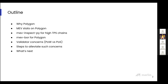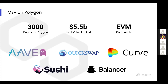Our motivation for solving the MEV problem on Polygon PoS chain was primarily because there is a large DeFi ecosystem currently standing strong on Polygon. Polygon PoS has over 3,000 dApps and around $5.5 billion locked in all of these. Well-known DeFi platforms such as Aave, QuickSwap, and Balancer draw direct parallels from Ethereum counterparts, and Polygon PoS is EVM-compatible, so bot writers and searchers have an easier time porting their systems from Ethereum.